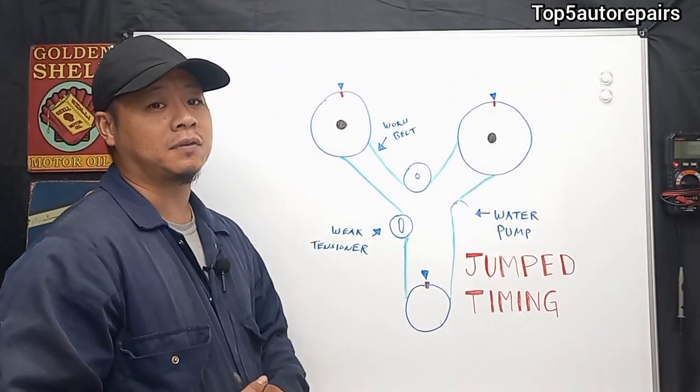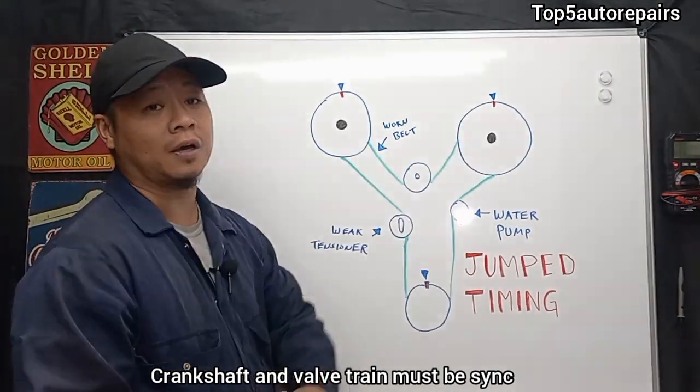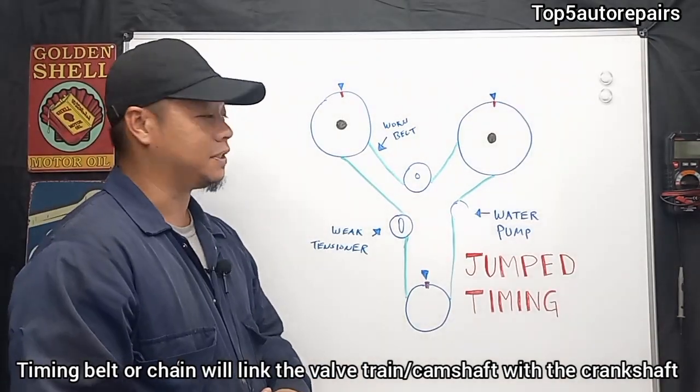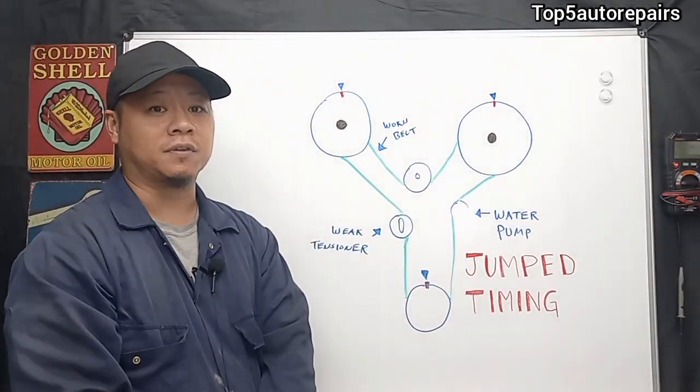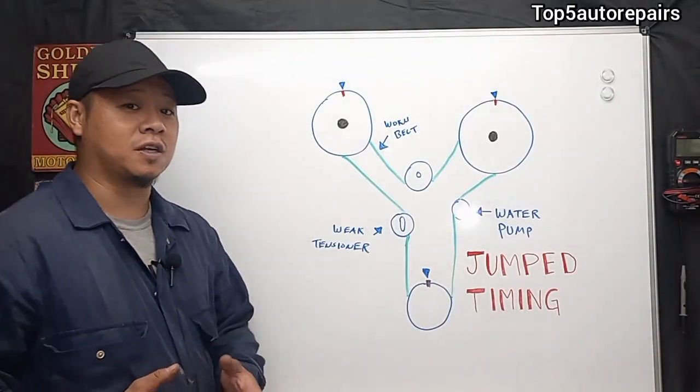So basically, when you have the timing system, on the bottom end you're going to have the crankshaft, the top end you're going to have the valve train. Basically, the timing belt or the timing chain is going to synchronize the top end and the bottom end of the engine to work together.